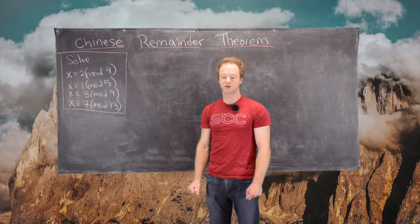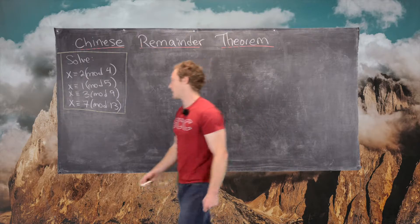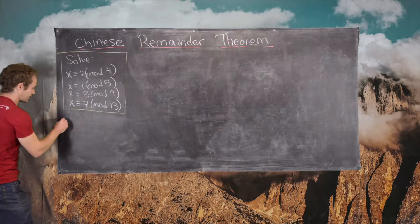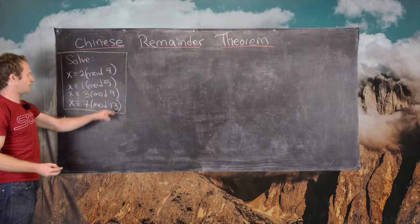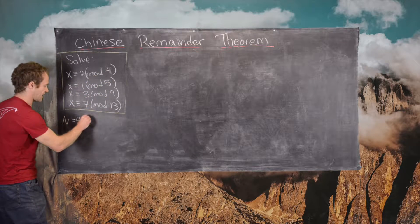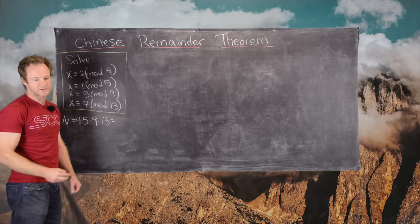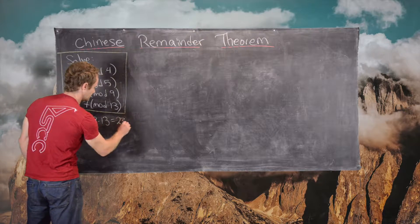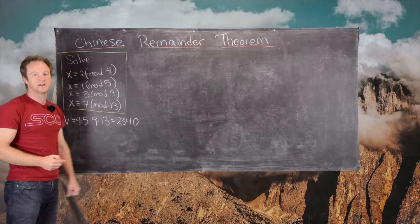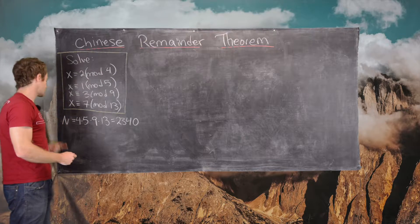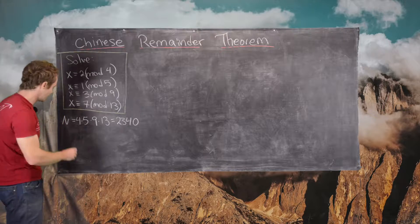We'll follow the constructive method that's outlined in the proof of the Chinese remainder theorem. The first thing to do is calculate capital N, which is the product of 4, 5, 9, and 13. So 4 times 5 times 9 times 13 equals 2,340. That's our capital N, and in the end we'll get a solution that will be unique modulo 2,340.